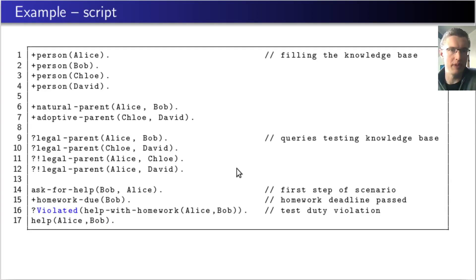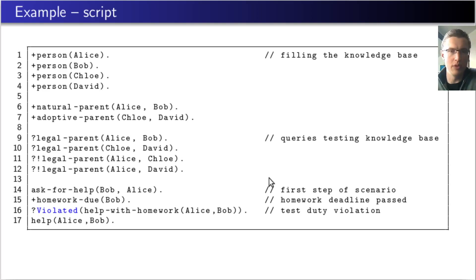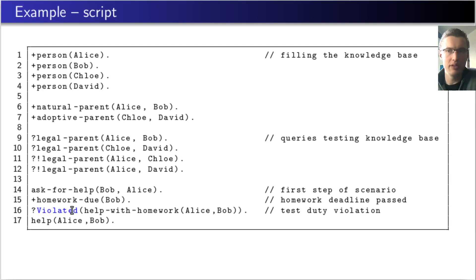This code fragment shows an example script. The first statements create certain facts — namely that Alice, Bob, Chloe and David are persons, that Alice is a natural parent of Bob, and that Chloe is an adoptive parent of David. The next four statements are queries, confirming that the legal parent relation is derived correctly. The next statement triggers the action of Bob asking Alice for help — this action is enabled because indeed Alice is a legal parent of Bob. The next statement indicates that Bob's homework is due, thereby causing the violation of the 'help with homework' duty for Alice. This is confirmed by the query in the next statement. The last statement terminates the duty by executing the action of Alice helping Bob.